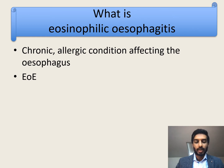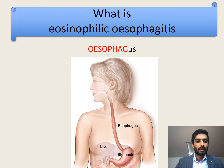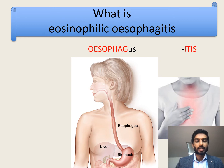Now you might ask why we have to give it such a long and difficult to pronounce name. I'll try and break it down so you can understand what this term actually means. The first part, esophagitis, refers to the esophagus — a long thin muscular tube which goes from the back of the throat to the stomach. Itis is simply the medical term referring to inflammation, so esophagitis simply means an inflamed or swollen esophagus.